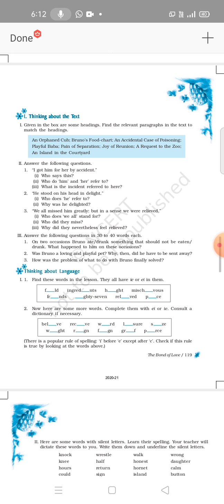Now thinking about language. Find these words in the lesson. They all have I-E or E-I in them. You have to learn these words by heart. First is field F-I-E-L-D. Second is ingredients, you have to fill I-E. Next is height H-E-I-G-H-T. Mischievous, you have to fill I and E. Friends, I and E, friends.